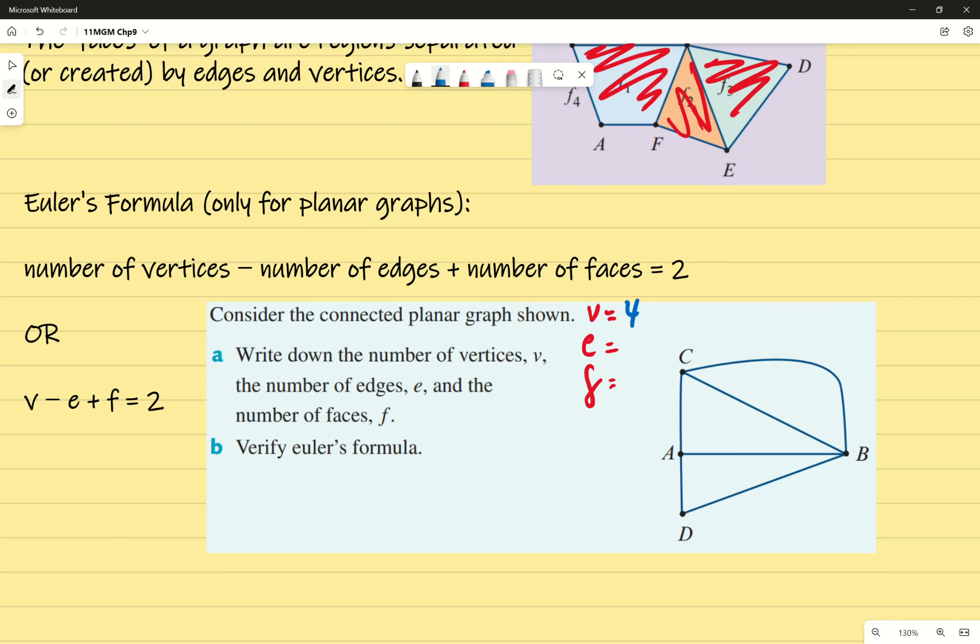Four. Edges? One, two, three, four, five, six—that's right, six. Here's a trickier one: how many faces are there? Four—one, two, three, four. Awesome, thank you. That is four.